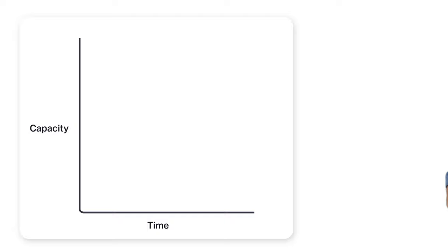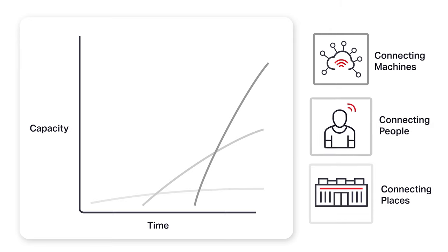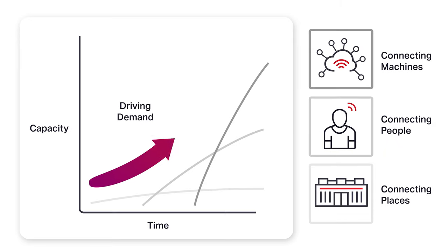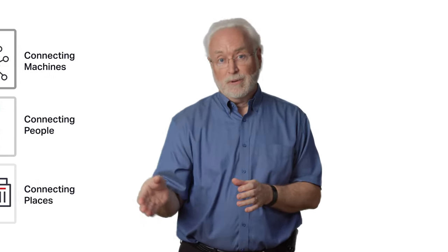So let's talk about our thinking when we build an adaptive network. When we first started to build networks, it was around connecting physical locations together. Then we started to connect people together with the wireless network. Now we're building networks that connect machines together. It's that combination of locations, people, and machines that drives the demand for flexible bandwidth, and that requires the adaptive network.